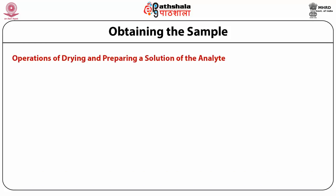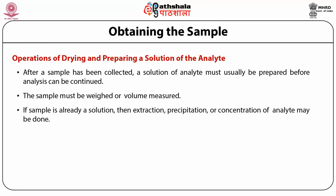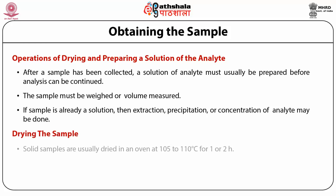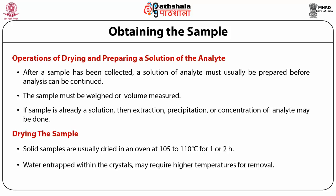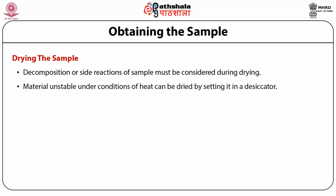After a sample has been collected, a solution of the analyte must usually be prepared before analysis can be continued. The sample must be weighed or its volume measured. If the sample is already a solution, extraction, precipitation, or concentration of the analyte may be done. Solid samples are usually dried in an oven at 105 to 110 degrees centigrade for one or two hours. Other non-essential water, such as water entrapped within a crystal, may require higher temperatures for removal. Materials unstable under conditions of heat can be dried by setting them in a desiccator.